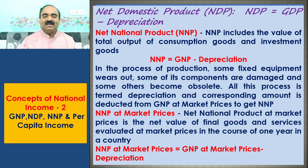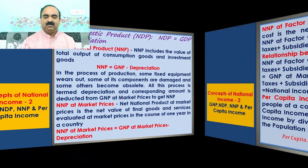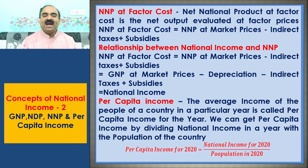NNP at market prices is the net value of final goods and services evaluated at market prices in the course of one year in a country. NNP at market prices is equal to GNP at market prices minus depreciation. NNP at factor cost is the net output evaluated at factor prices, which equals NNP at market prices minus indirect taxes plus subsidies.